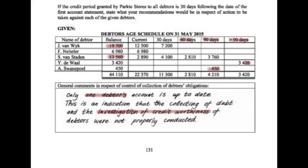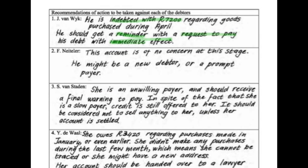Debtor number two, F. Natler, is our model debtor. He is doing exactly as he should, because he doesn't have anything owed to us older than the current period. He's paid everything as required and still owes us $6,980, but we are not too worried because he is paying off his account as requested. His account is of no concern at this stage — he's either a prompt payer or possibly a new debtor, and hopefully we won't experience any problems with him.